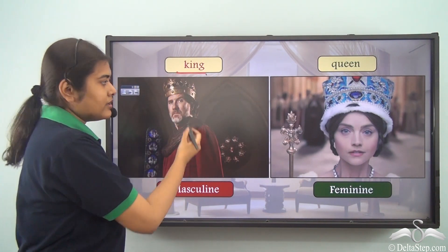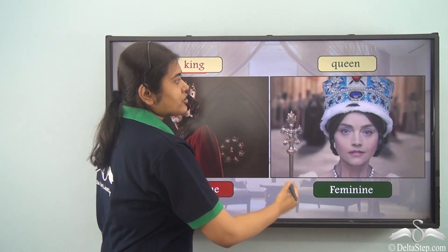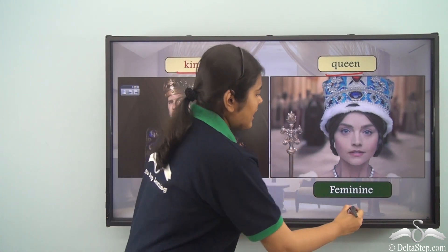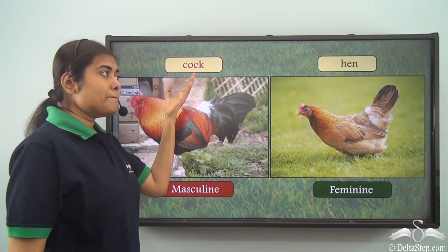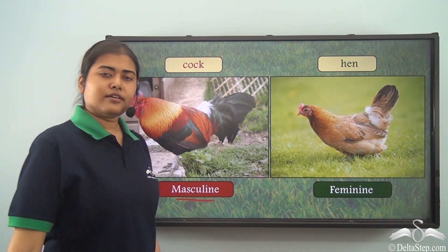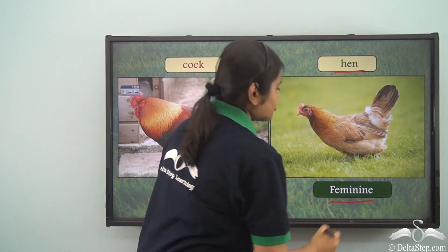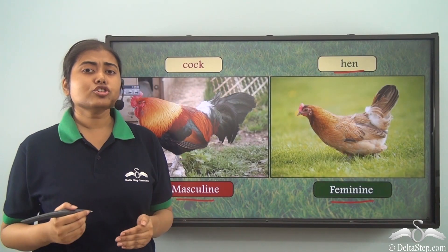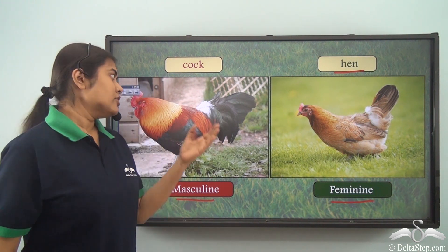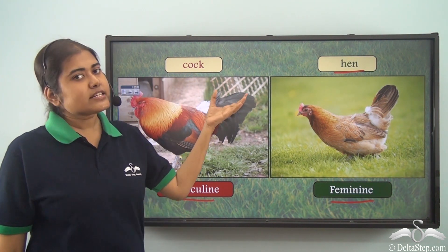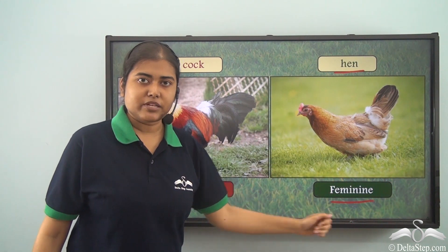King refers to the male, as you can see in the picture, so king belongs to the masculine gender. Queen refers to a female and belongs to the feminine gender. Cock is the male and is hence of the masculine gender, whereas the hen is the female and belongs to the feminine gender. So not only human beings but also animals are either male or female — the male bird is the cock whereas the female bird is the hen.